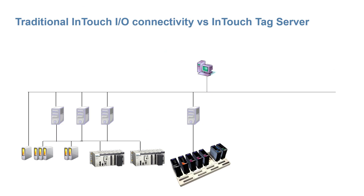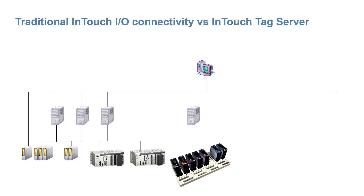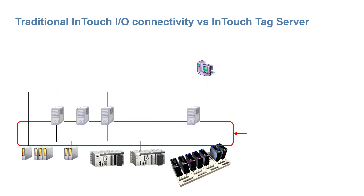Now let's compare traditional InTouch IO connectivity versus InTouch tag server. A typical factory network is usually separated into two parts: the plant network, which is usually high-speed Ethernet, and then the device communications on the plant floor, which may include older infrastructure sensitive to heavy traffic loads as it was never designed to support the additional bandwidth for SCADA or supervisory control and HMI.